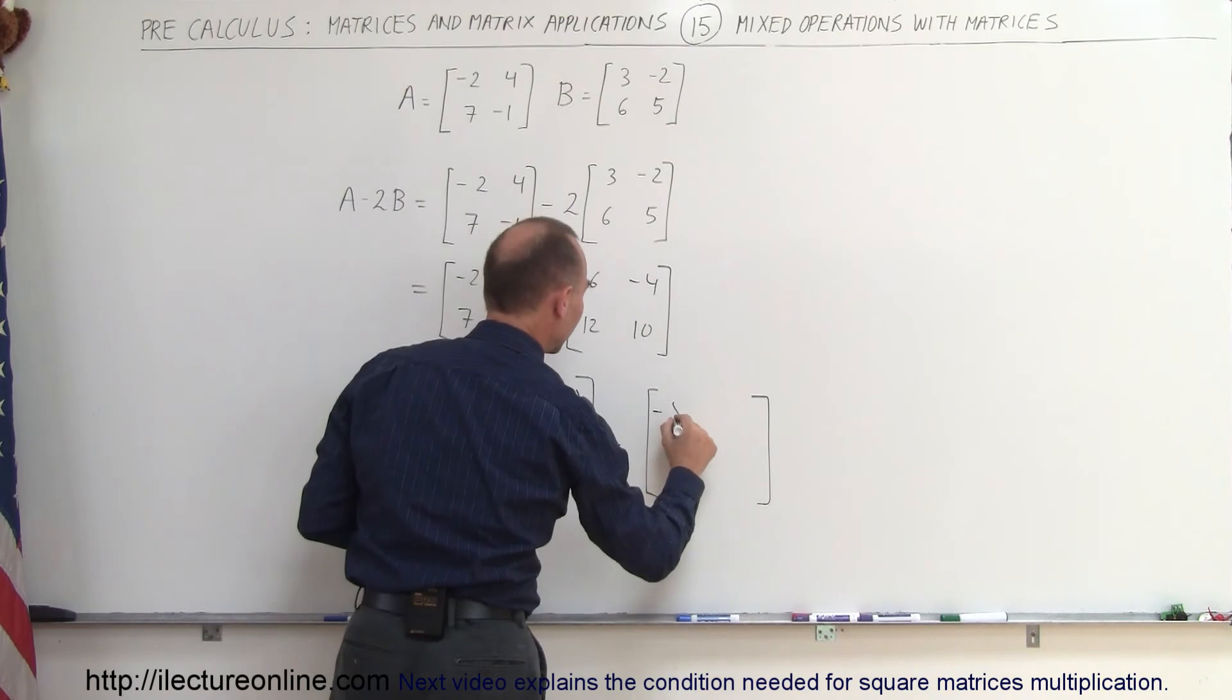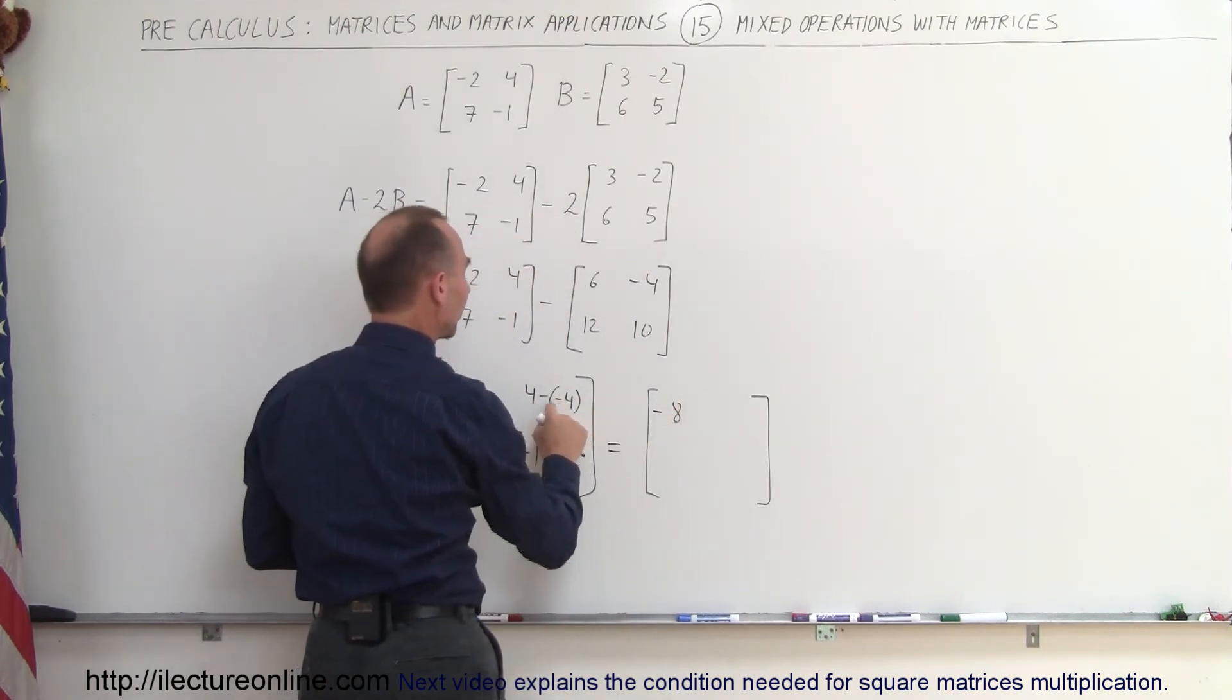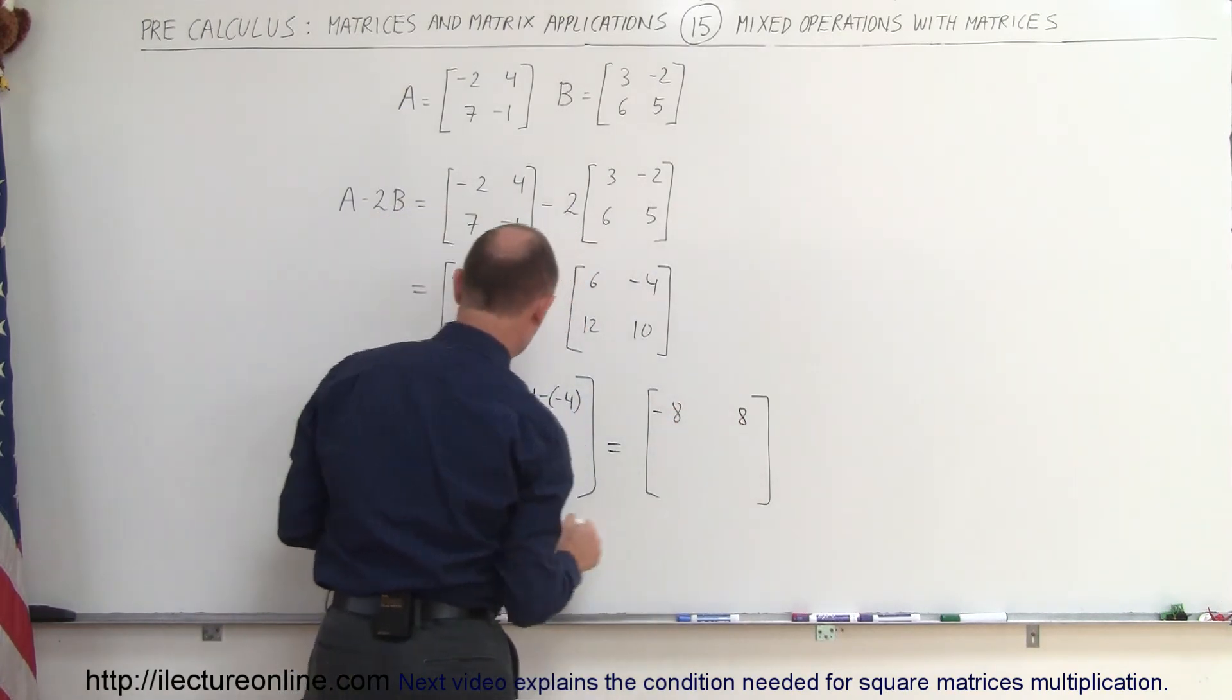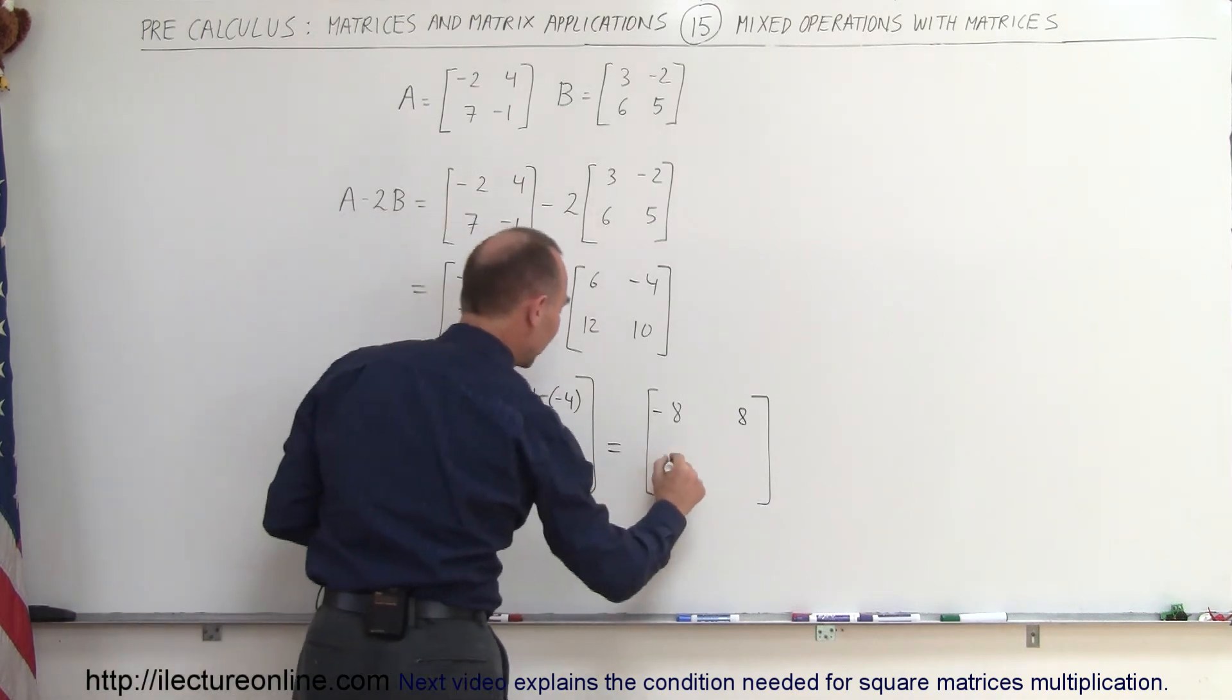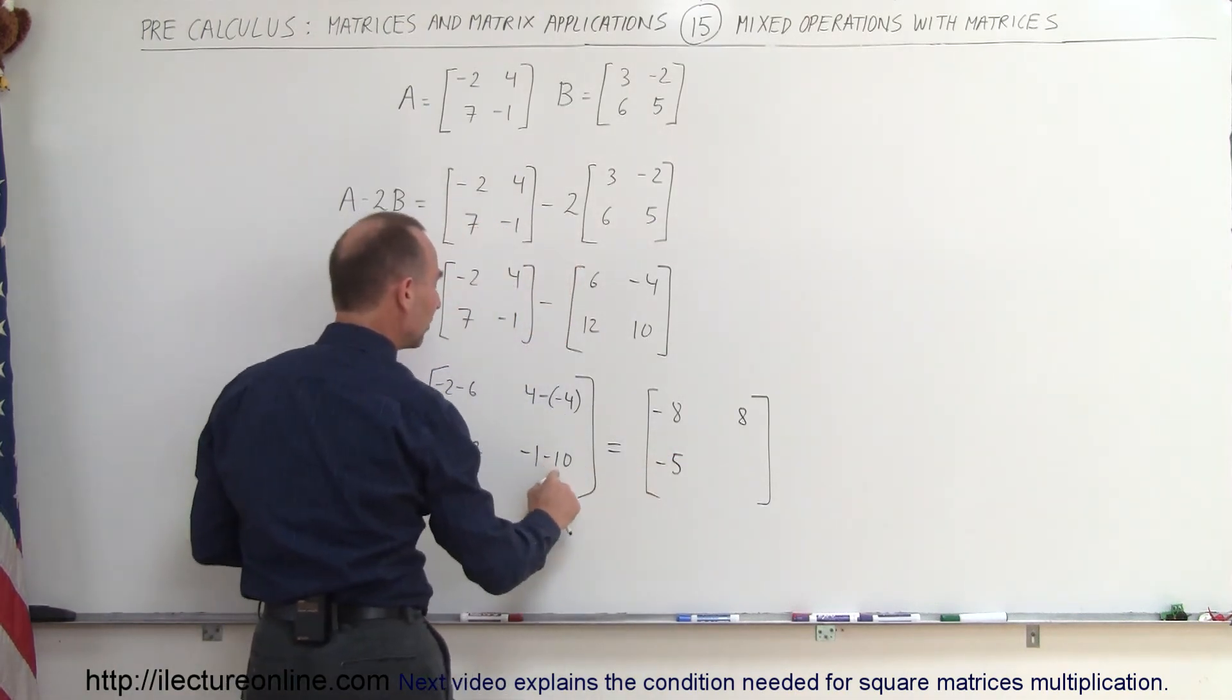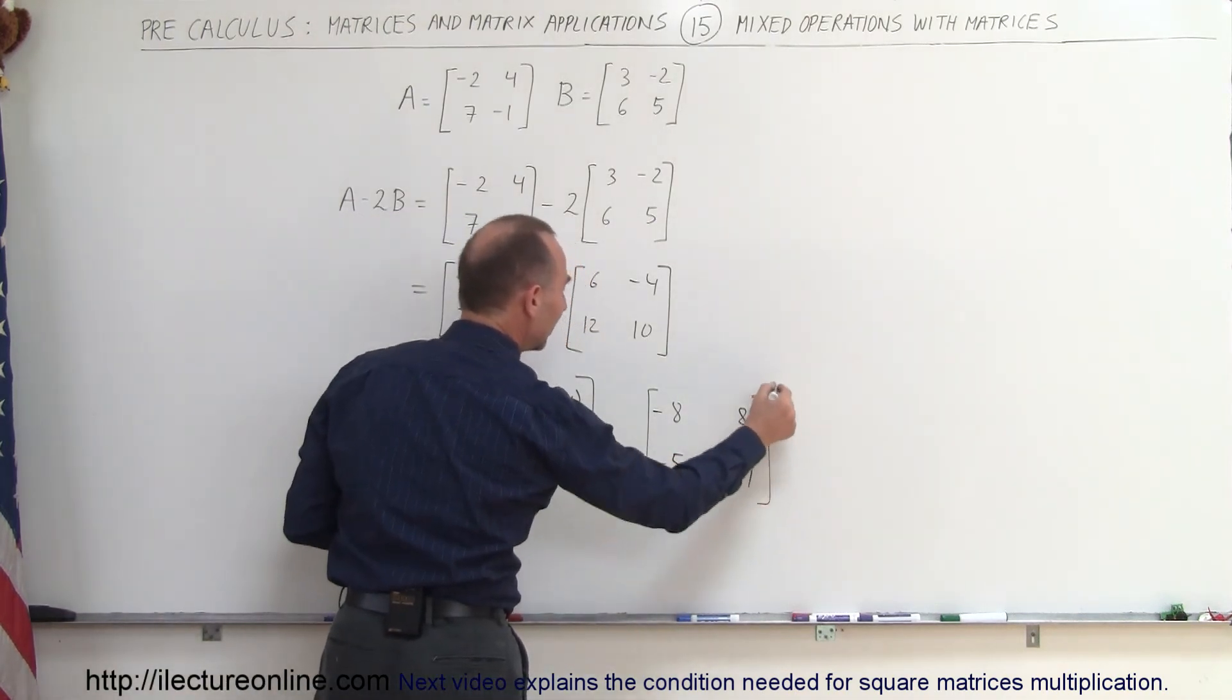Minus 2 minus 6 is minus 8, 4 minus negative 4 that's 4 plus 4 which is a positive 8, 7 minus 12 is minus 5 and minus 1 minus 10 is minus 11.